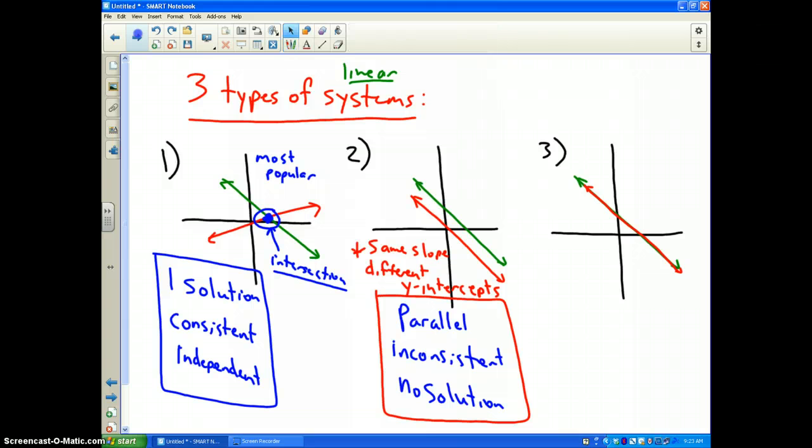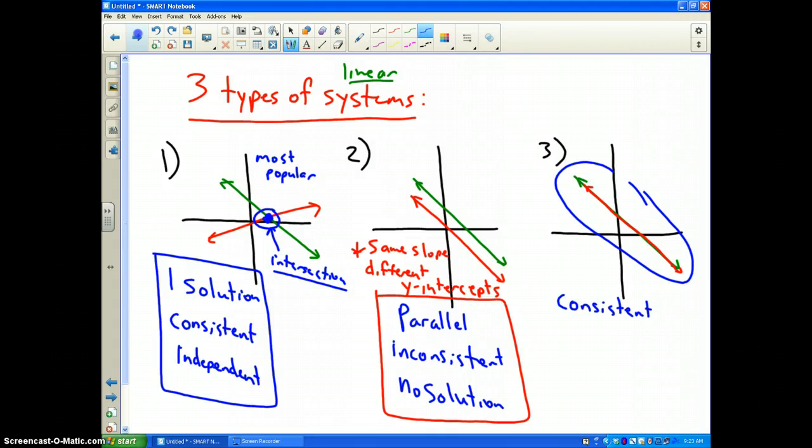The third and final type of system is the one where the two lines are exactly the same. I hope you noticed that my red line and my green line are supposed to be right on top of each other. This is a type of system that is called consistent and dependent.